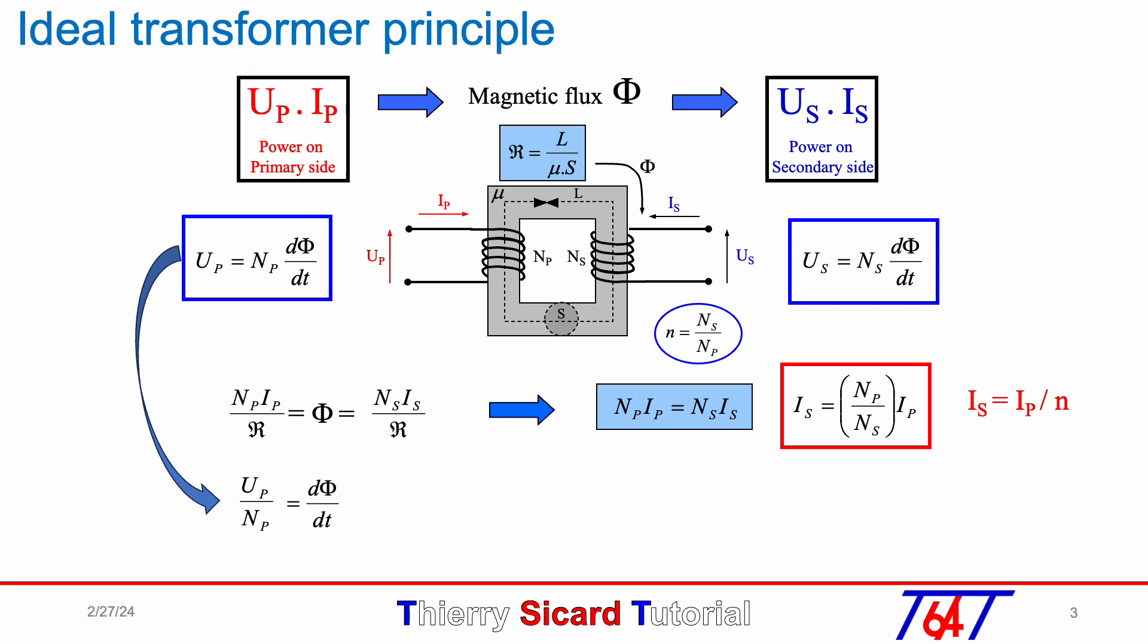But of course, as each coil sees the same magnetic flux variation, dΦ/dt is also equal to U_S over N_S. From this relation, we get U_P N_S equals U_S N_P, which gives the voltage relation U_S equals n U_P.